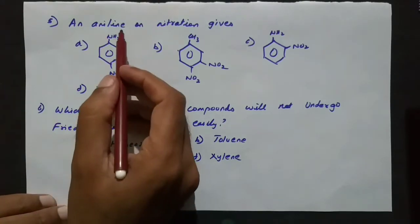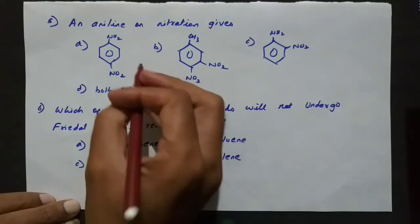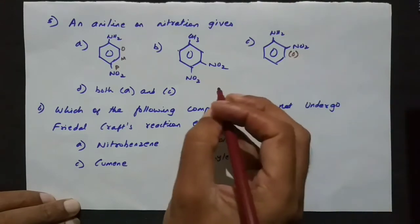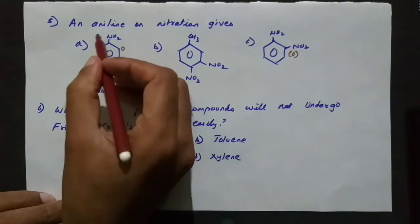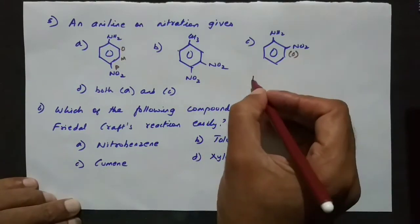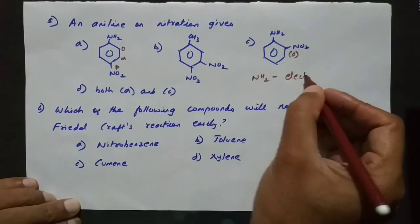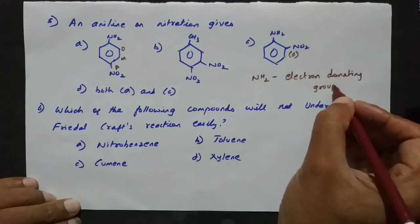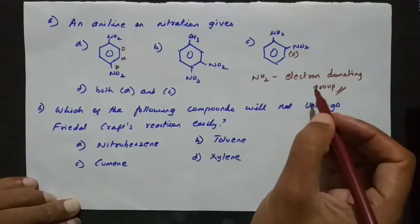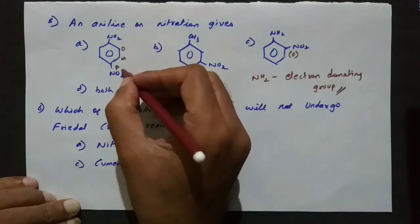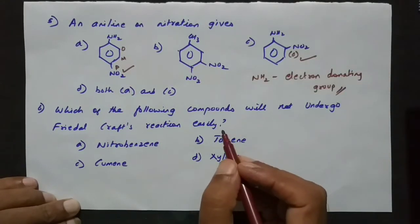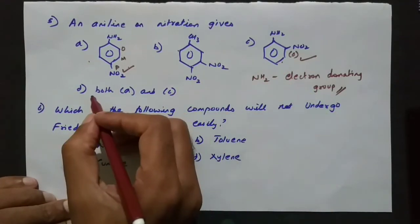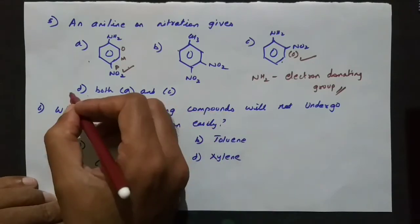The next question: aniline on nitration gives which products? We know ortho, meta, and para positions. NH2 is an electron-donating group, and electron-donating groups always direct to ortho and para positions. So both the ortho product and the para product will be formed. So options A and C are both correct, and the answer will be D (both A and C).